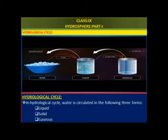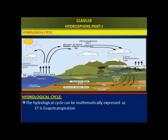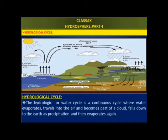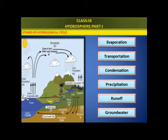In the Hydrological cycle, water is circulated in three forms: liquid, solid, and gaseous. The Hydrological cycle can be mathematically expressed as RF = RO + ET, where RF is rainfall, RO is runoff, and ET is evapotranspiration. The Hydrological cycle is a continuous cycle where water evaporates, travels into the air and becomes part of a cloud, falls down to the Earth as precipitation, and then evaporates again. There are six stages or processes involved in the water cycle: Evaporation, Transportation, Condensation, Precipitation, Runoff, and Groundwater.